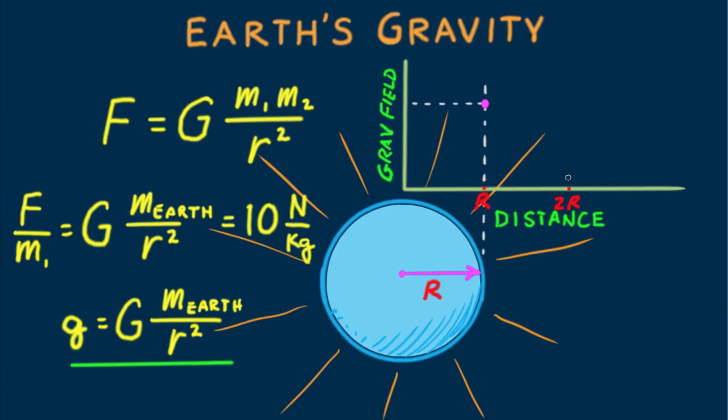At a distance twice Earth's radius, the field is one-quarter as strong as at the surface. Another purple dot. At a distance three times Earth's radius from the center, it's one-ninth as strong, and so forth. We connect the dots and see a graph that clearly illustrates the inverse square law.